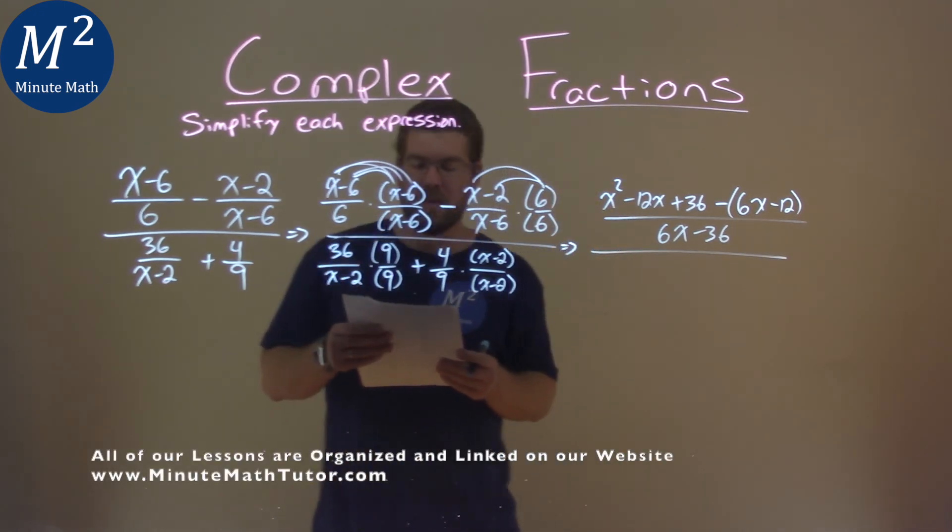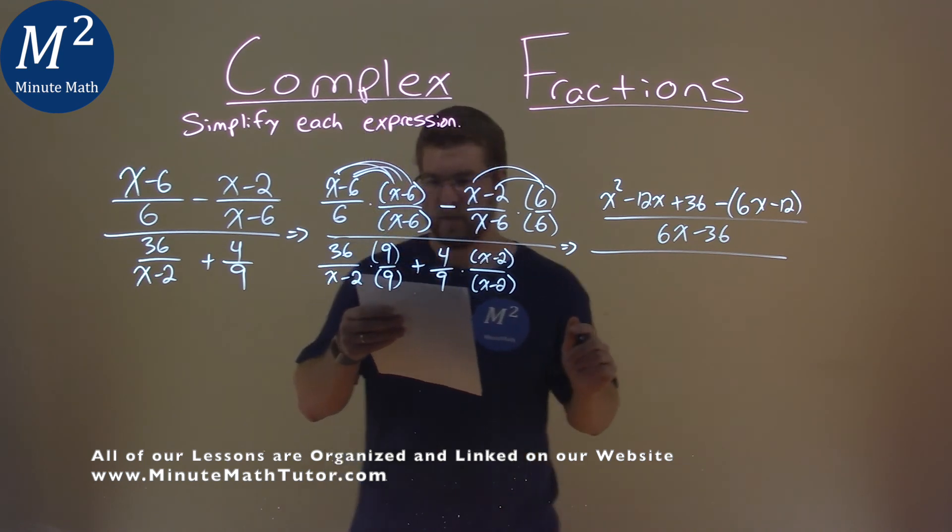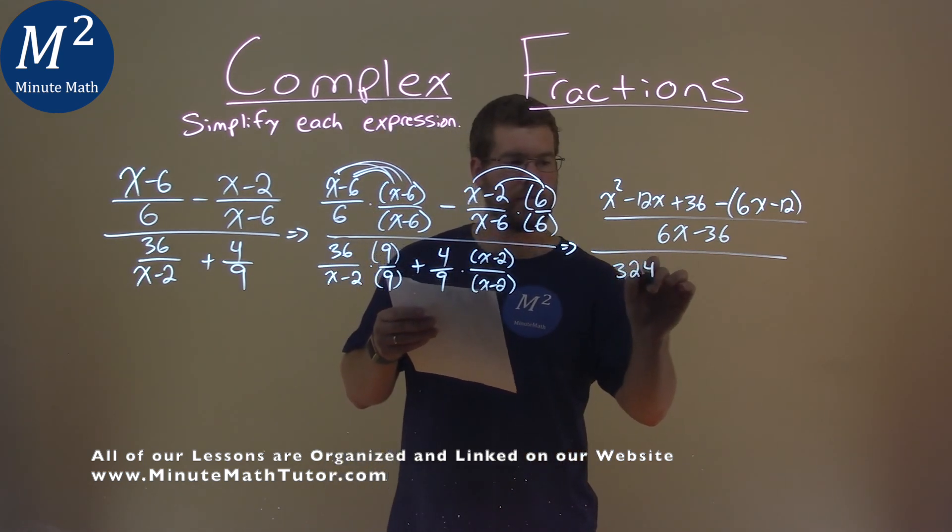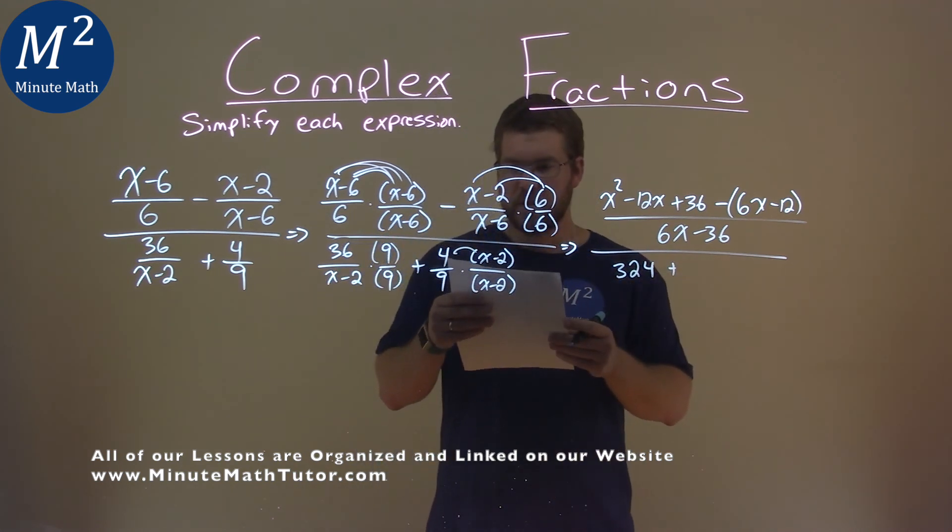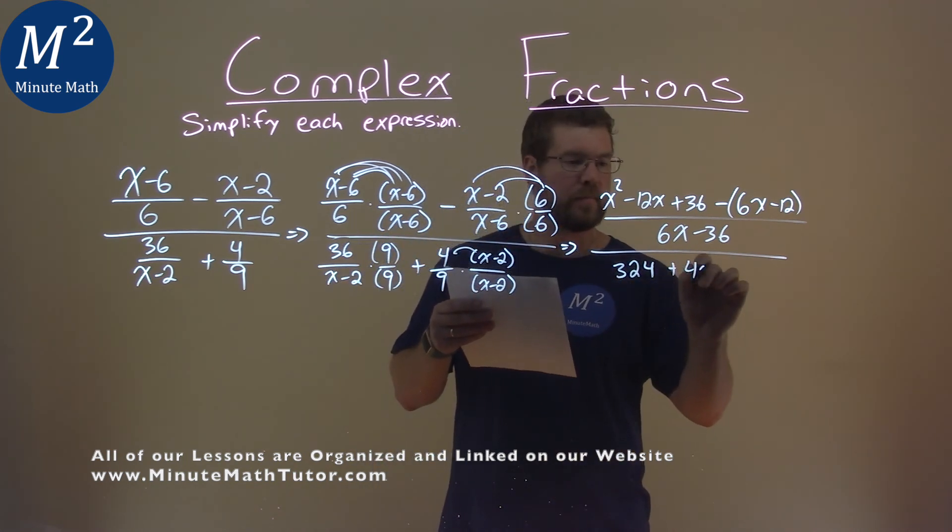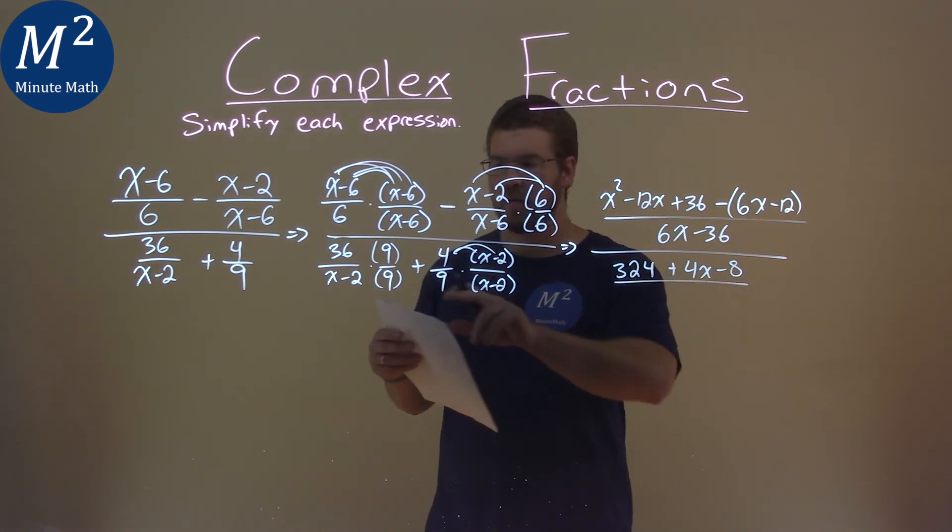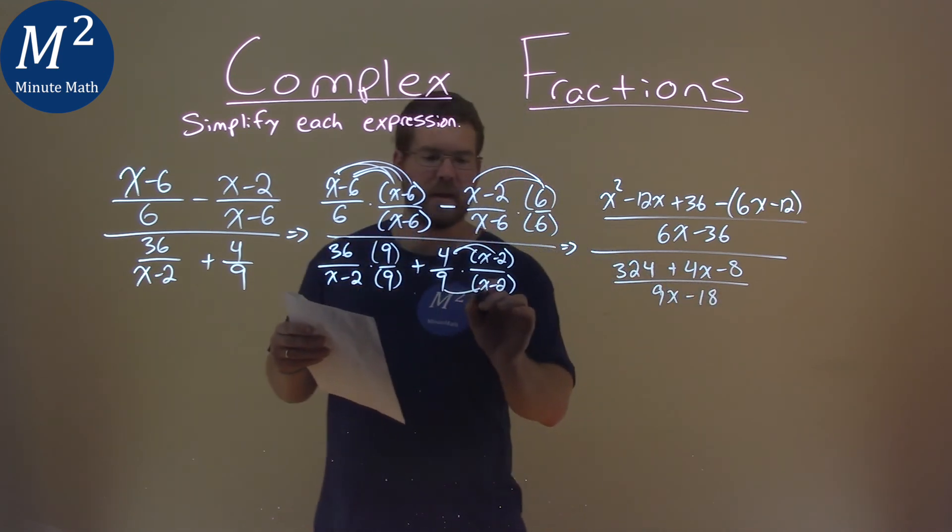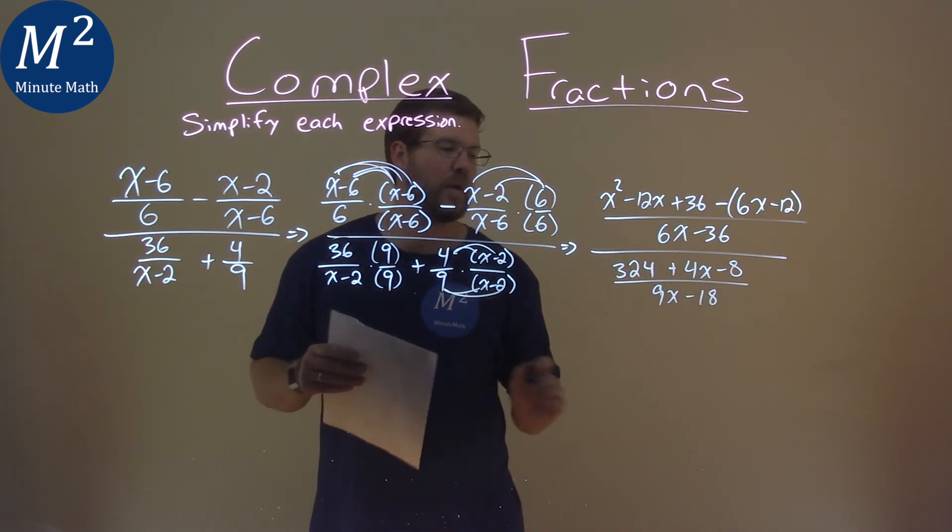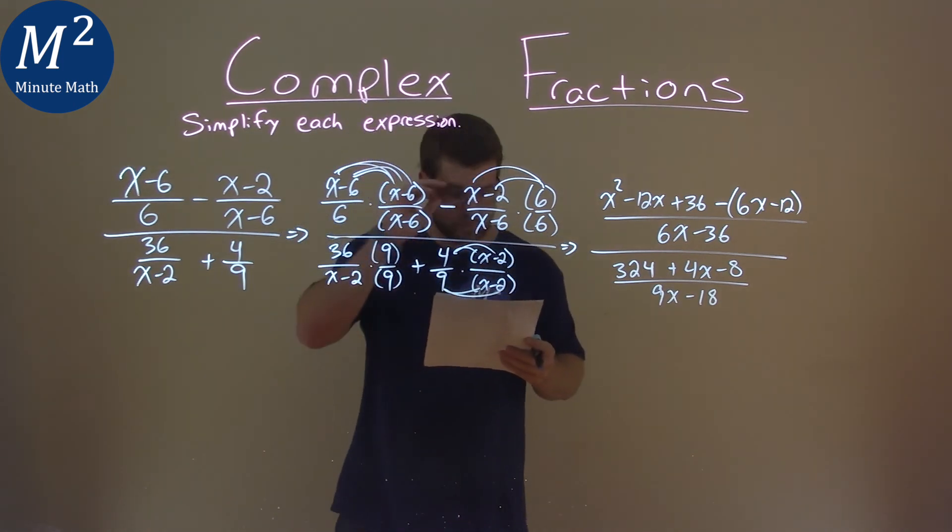All over this good old glorious denominator here. 36 times 9 is a 324, plus 4 times x, which is a 4x, and 4 times a minus 2 is a minus 8. And that's all over this denominator, 9x minus 18. 9 times x is 9x, 9 times a minus 2 is a minus 18. Remember, it's the same denominator. Okay.